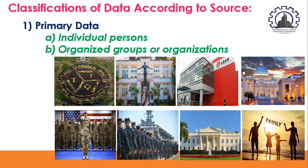So what is meant by primary data? If we say primary data, these are those gathered from primary sources. The primary sources are individual persons. We also have organized groups or organizations such as associations, fraternities, schools, business firms, the church, army, navy, air force, and government. We also have lawmaking bodies, family, and tribe.